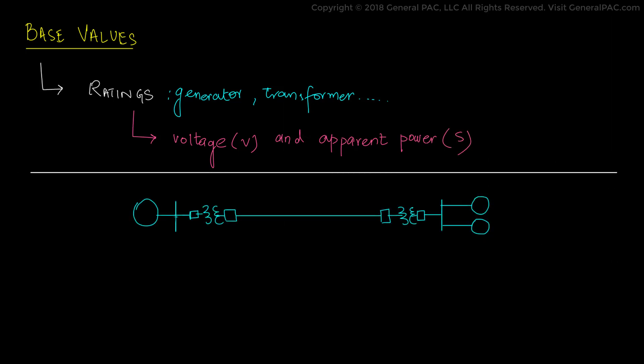In power systems that consist of many equipment like generators, transformers, transmission lines, capacitor banks, and so forth, we take the largest equipment rating as a base value.